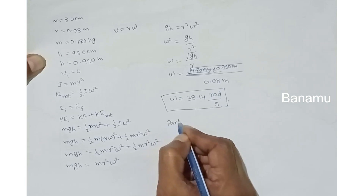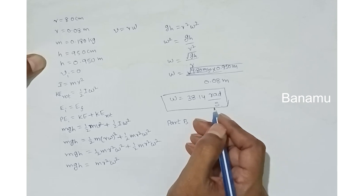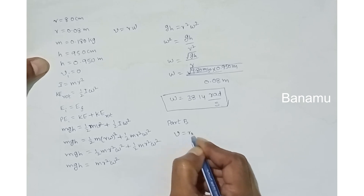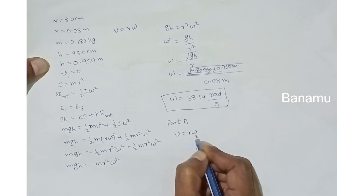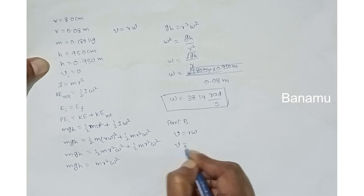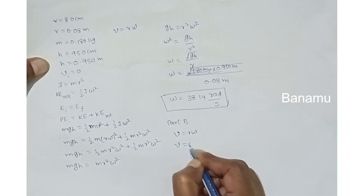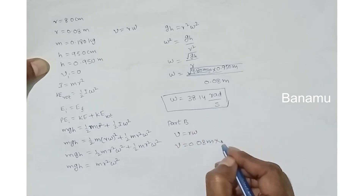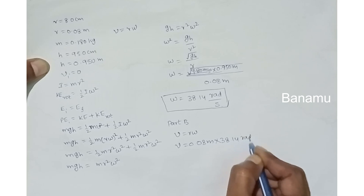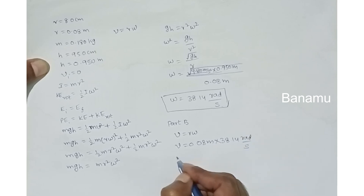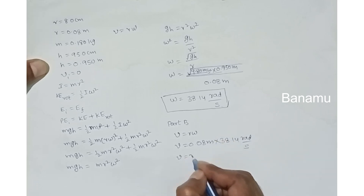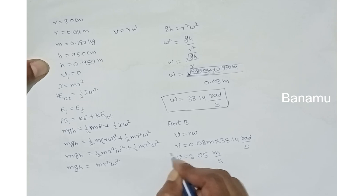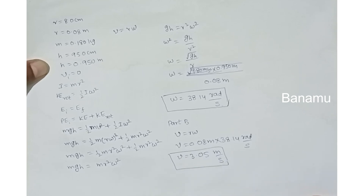For Part B, the speed of the hoop at its center is given by V equals R·omega, where R is the radius and omega is the angular speed. Substituting R equals 0.08 meters and omega equals 38.14 radians per second gives V equal to 3.05 meters per second. This is the speed of the hoop at its center.